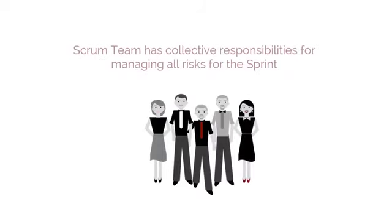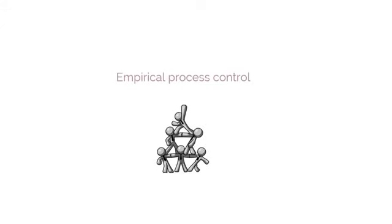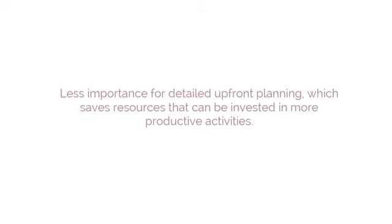The Scrum team has collective responsibility for managing all risks for the sprint. The difference is that Scrum emphasizes collective ownership and management of risks, whereas traditional project management methods stress individual accountability. Also in Scrum, as it believes in empirical process control, there is less importance for detailed upfront planning, which saves resources that can be invested in more productive activities.